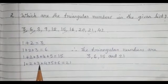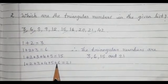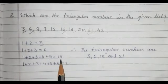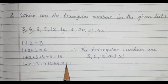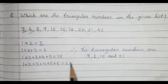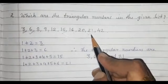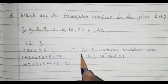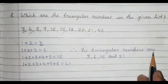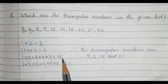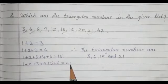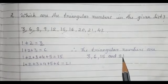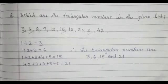For 21: 1+2+3+4+5+6=21. We can also see that 15+6=21. So 21 is a triangular number. And 42 is not a triangular number. Therefore, the triangular numbers from the list are 3, 6, 15, and 21.